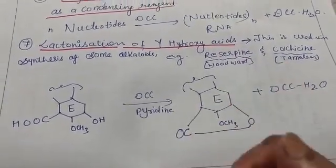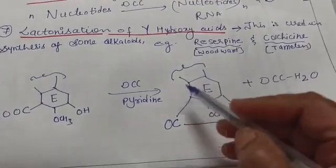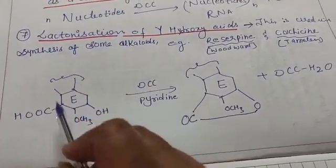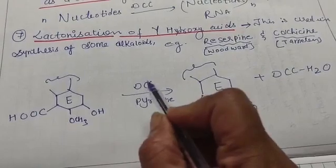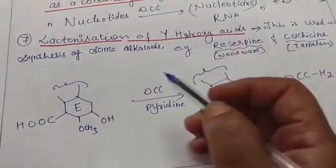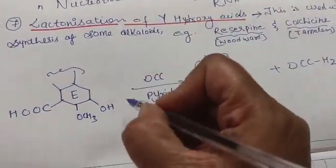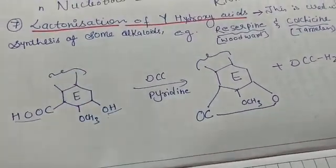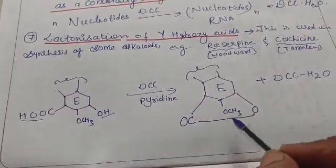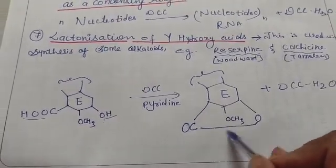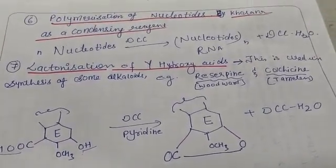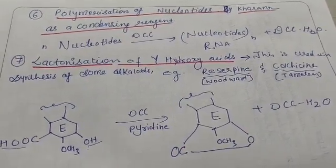The last important application is the lactonization of gamma-hydroxy acids. A lactone ring forms by cyclization: in a gamma-hydroxy acid, both a hydroxyl group and an acid group are present. In the presence of DCC and pyridine, one hydrogen and one OH are eliminated as water, and the lactone ring is formed. These are the important applications of DCC. Please share this video with your friends, and subscribe to the channel — thanks for watching.